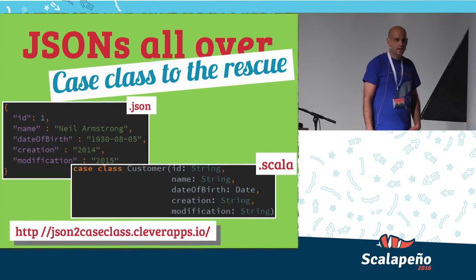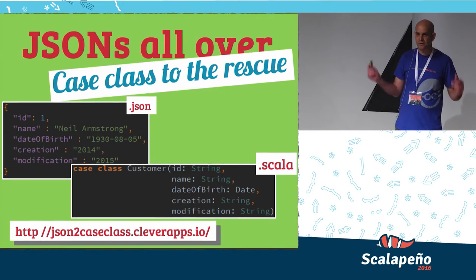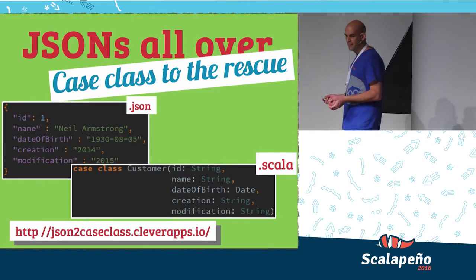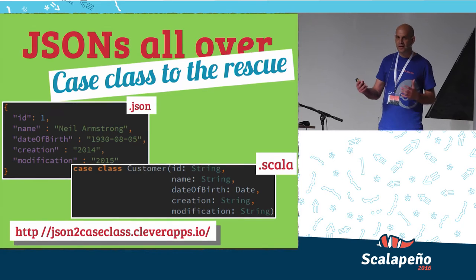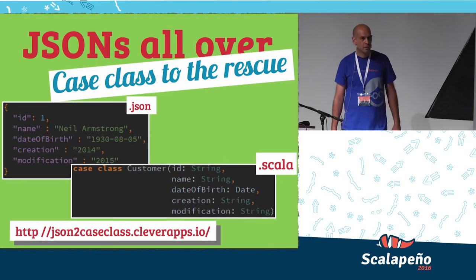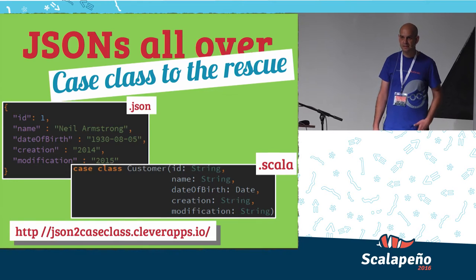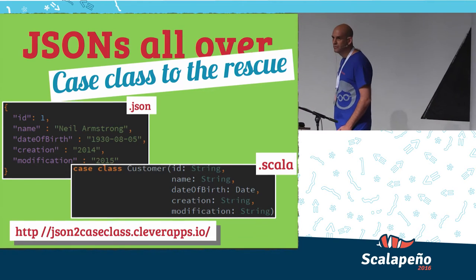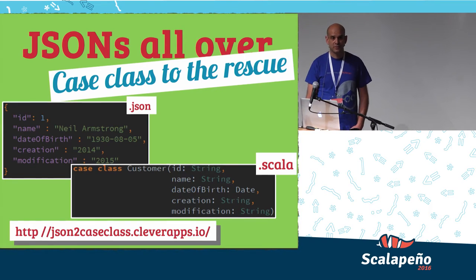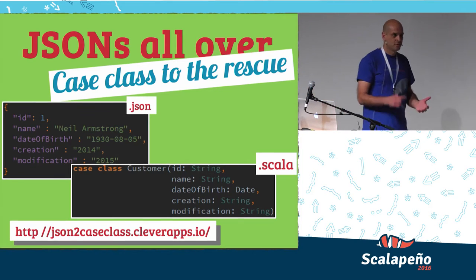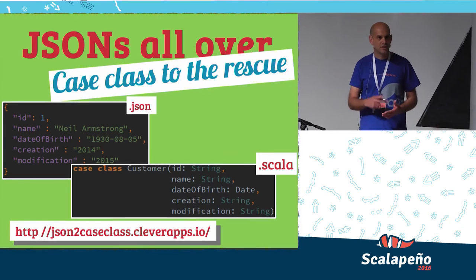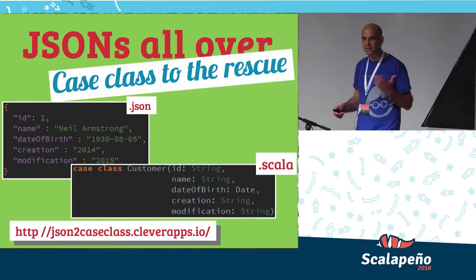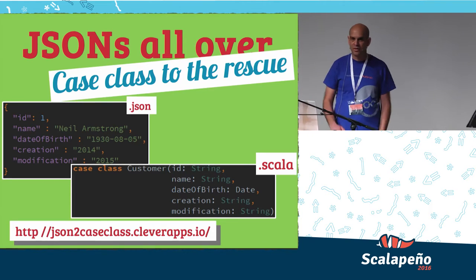In a REST API, you probably have JSONs all over. You get JSON when you invoke an HTTP GET request, you send JSON input on POST. How do you model it in your application? Luckily, we have case classes — the most effective way to represent JSON inside your application. They bring you serialization, hash code equals, and type validation.